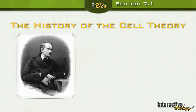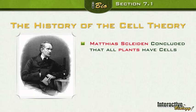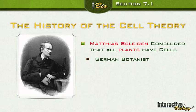The next person is Matthias Schleiden. With a name like Schleiden, you might guess he's from Germany — and yes, he was a German botanist. Botany means plants. And he was the one that concluded that all plants have cells.